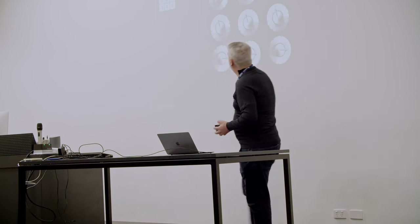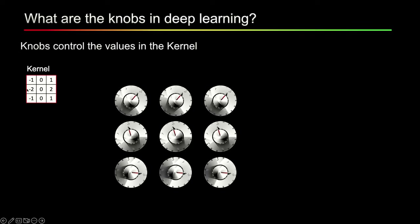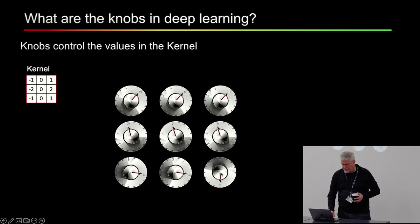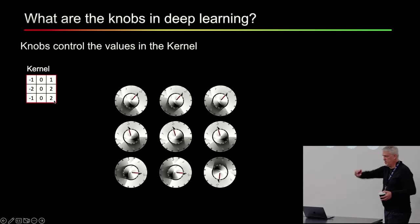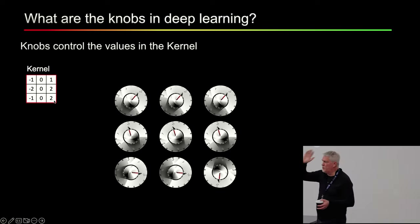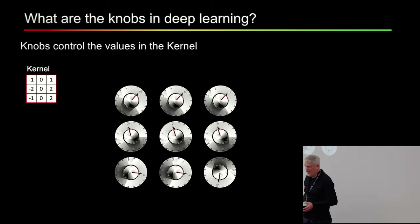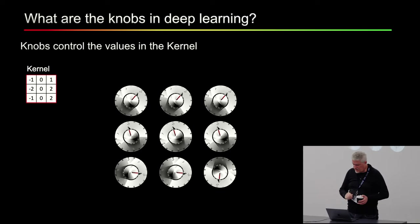What are the knobs? The knobs are these numbers. In deep learning, what we're doing is adjusting the numbers used in the kernel for the convolution. If I take this dial and turn it, I can change the 1 in that corner into a 2 by turning the knob — or 1.5 halfway. These aren't restricted to integers. That's the basic thing we're learning.